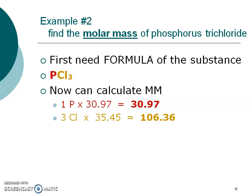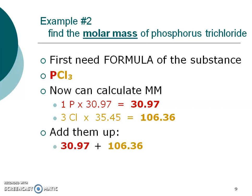Those are the masses of the individual elements, but I want the mass of the whole compound, so add those two numbers up. Pause and see if you can do the mathematics. Hopefully you paused and got an answer of 137.33 grams per mole — and that's how we write grams per mole: g/mol.